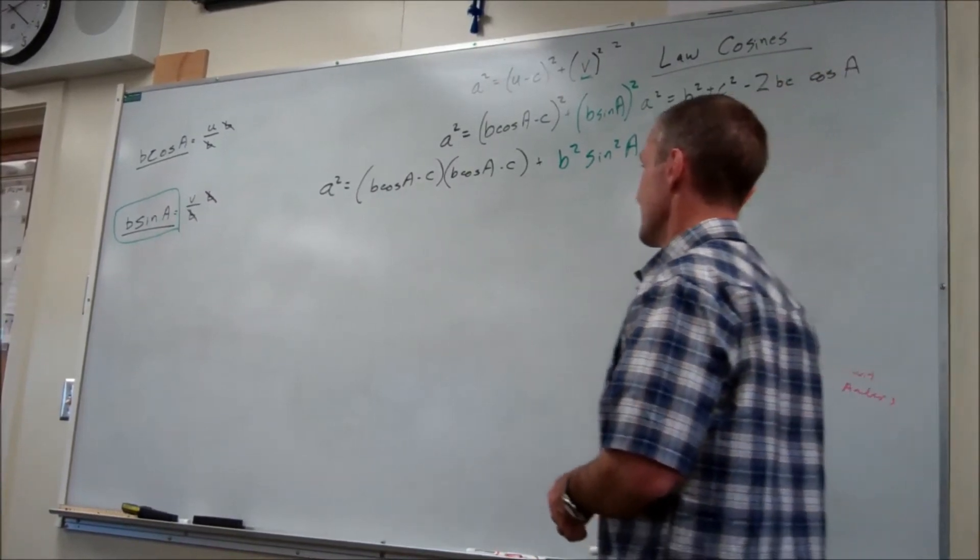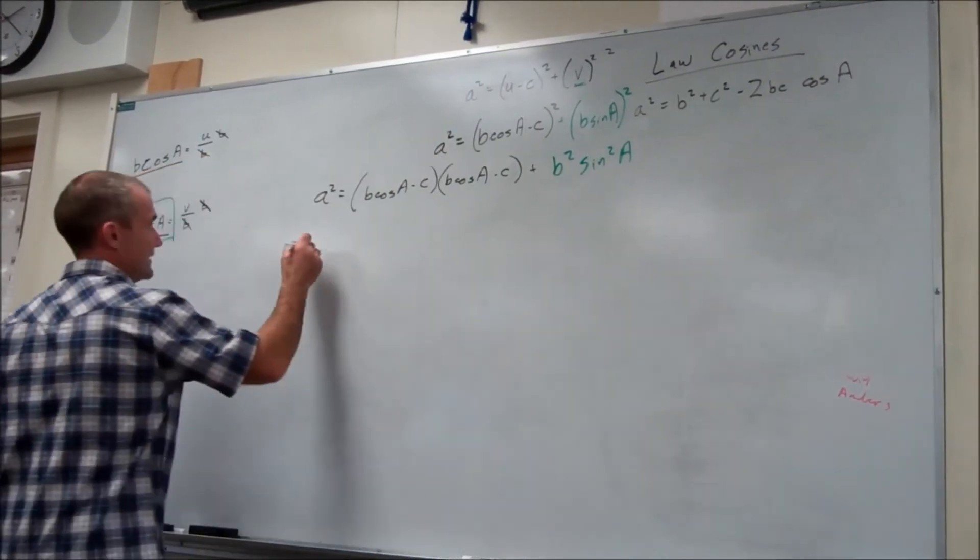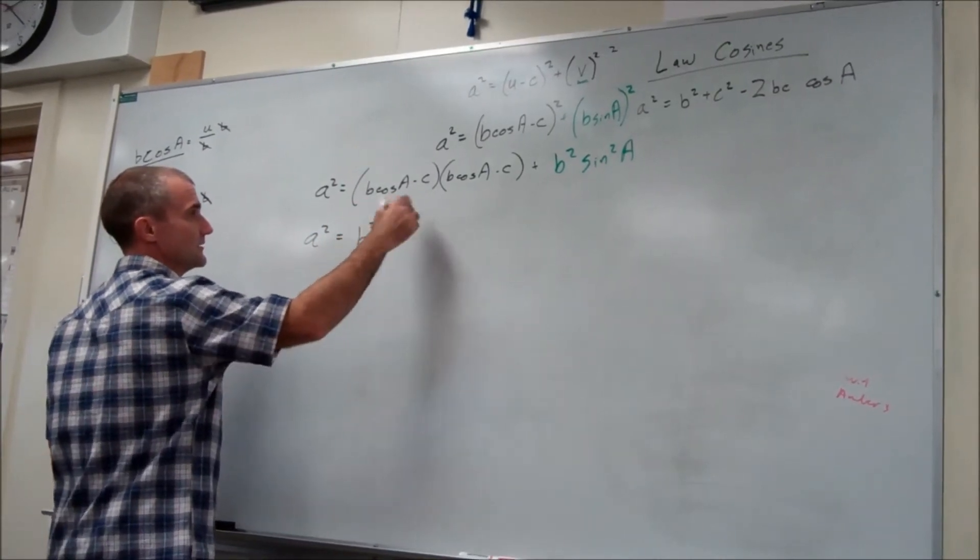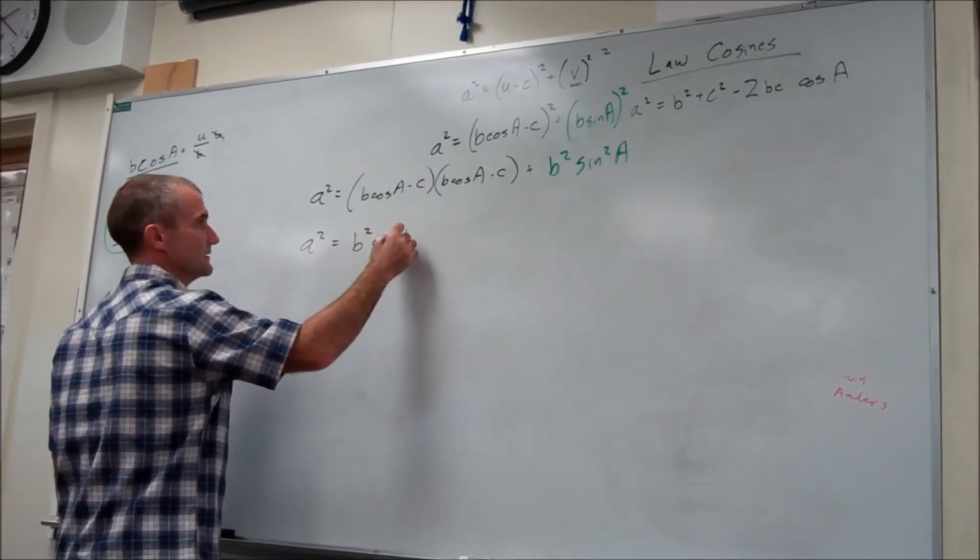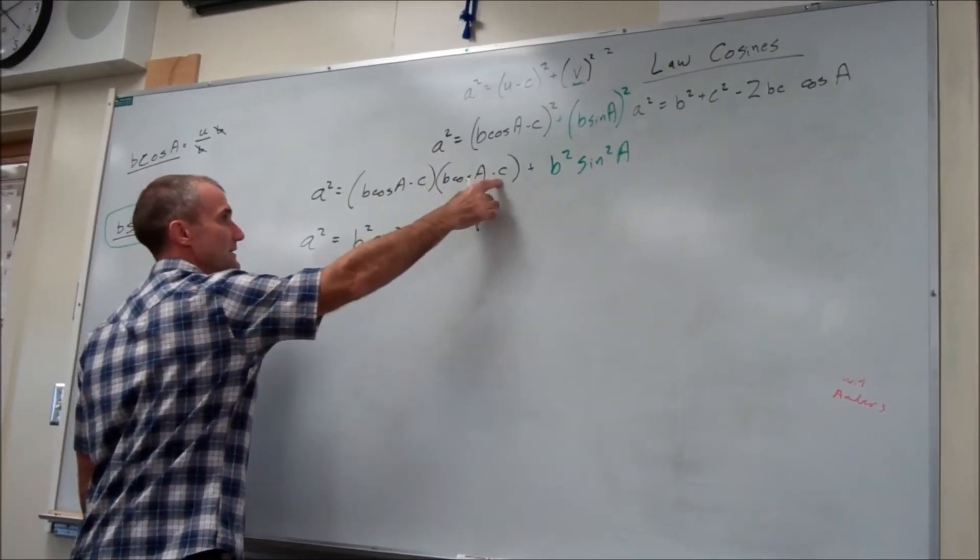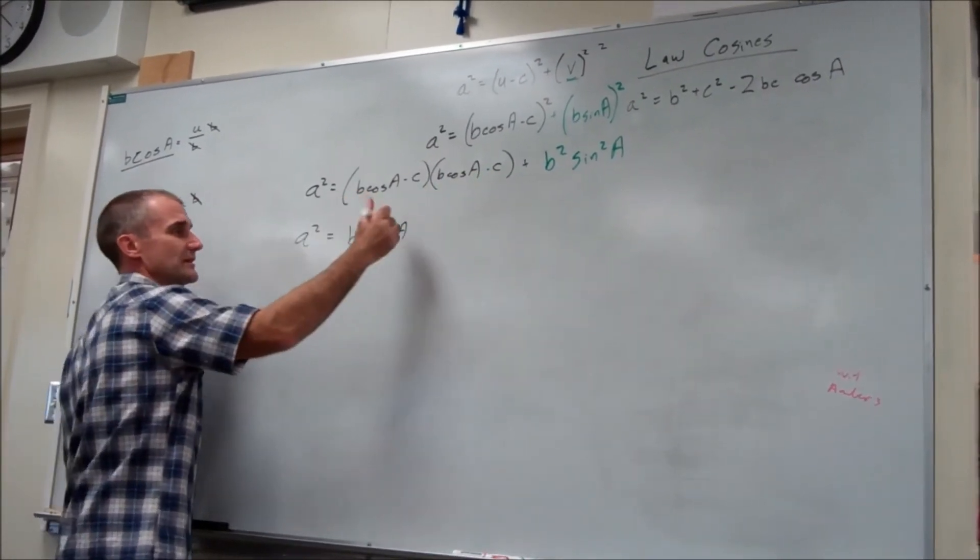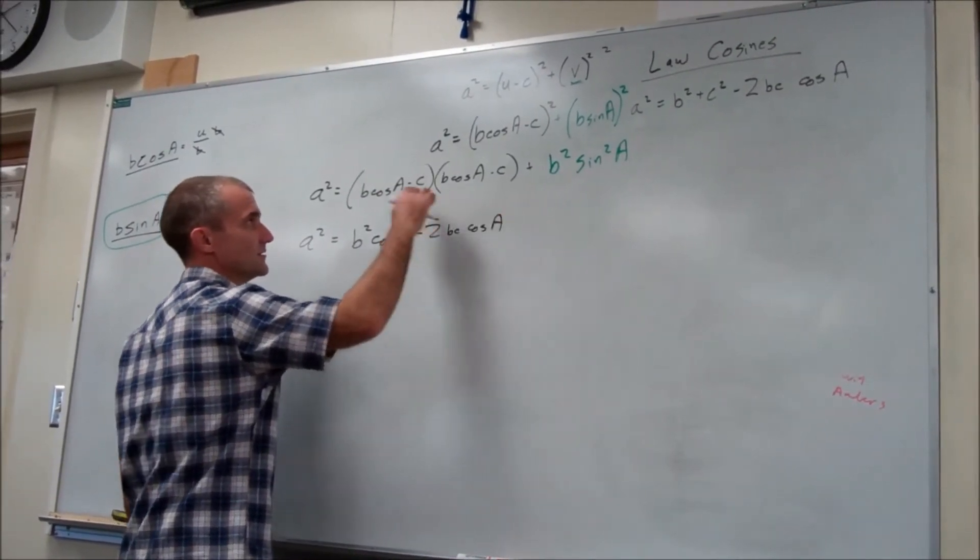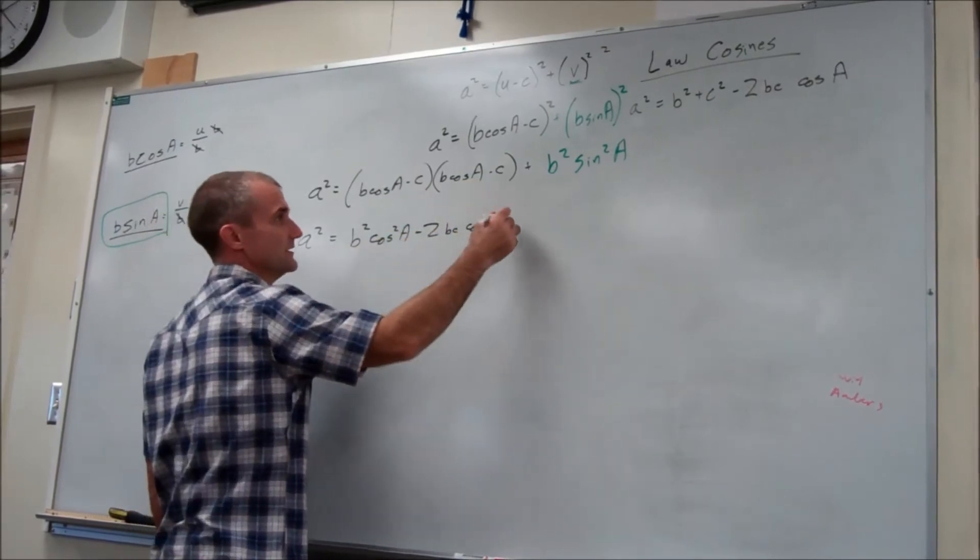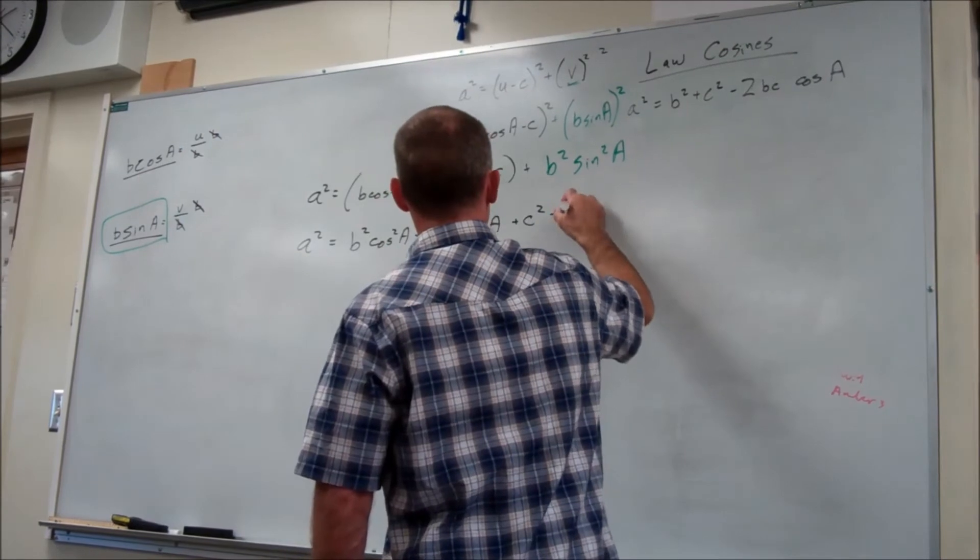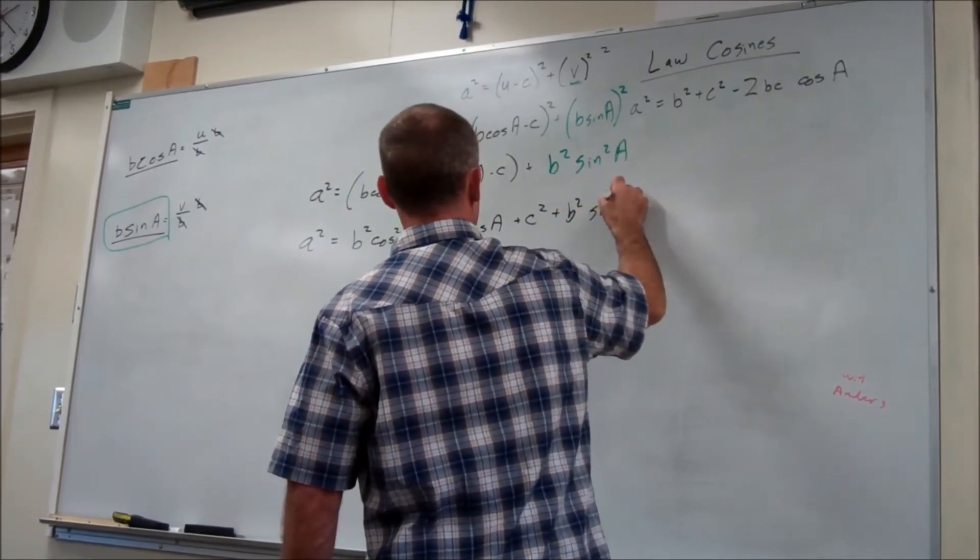Now I'm just going to foil those out. A squared is equal to b squared cosine squared of a, minus bc cosine of a, minus bc cosine of a, so minus two bc cosine of a, plus c squared, plus b squared sine squared of a.